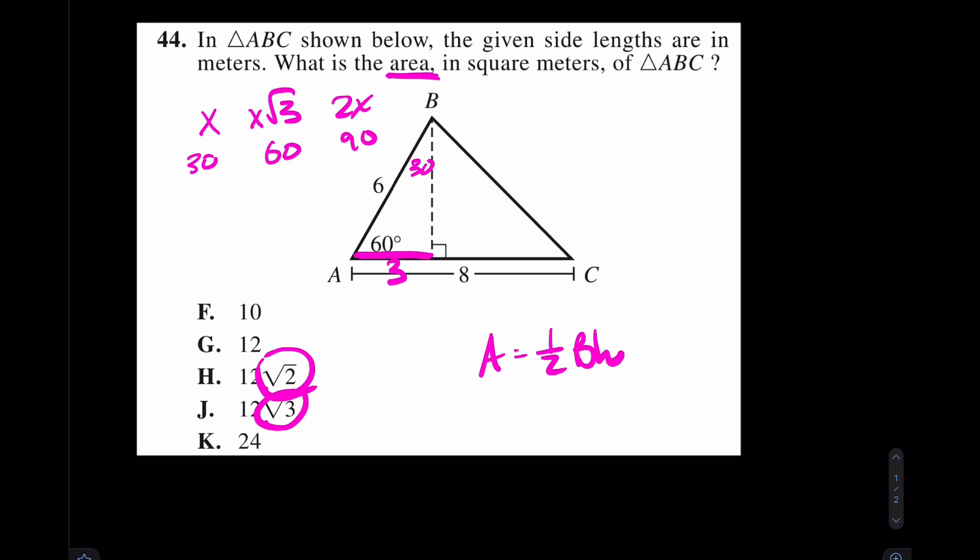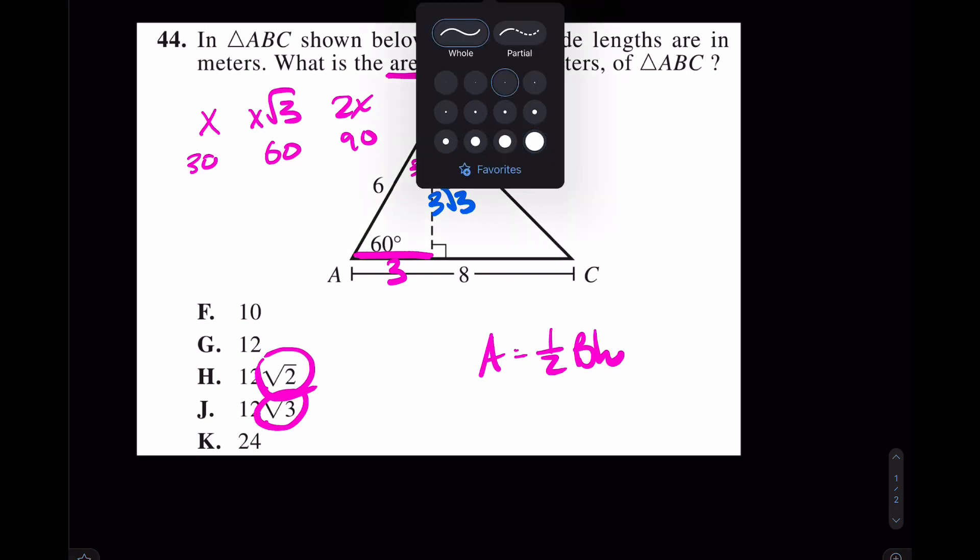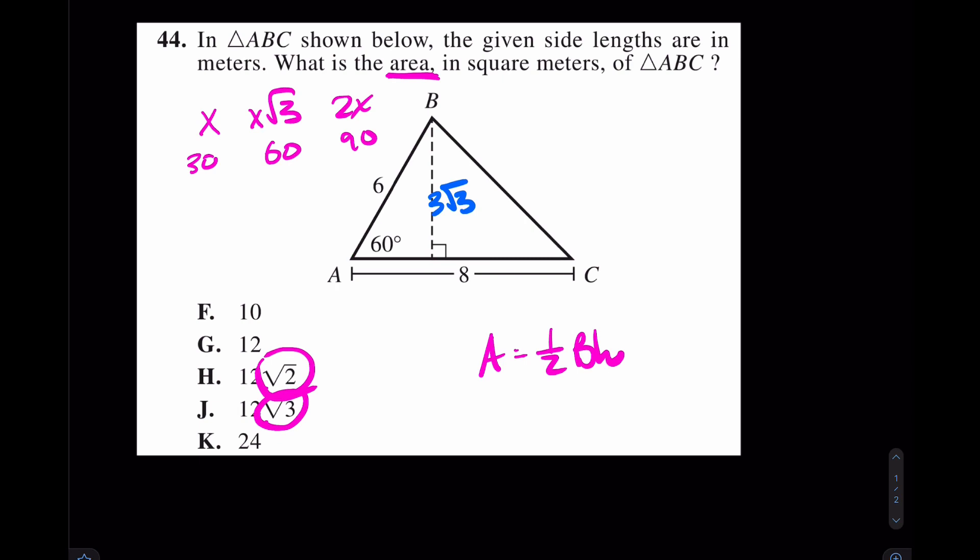Oh, well, that's easy. If that side is 3, then this side must have been 3 root 3. Again, 3, 3 root 3, 6. That's a 30, 60, 90. So I'll clean this up a little bit for you because at this point, we're done. We have the base and we have the height. Now, what are we going to do? Well, it's just 1 half times the base, which is 8, times 3 root 3, and we're done. The answer is going to be J, 12 root 3. If you have any questions, of course, chime off in the comments down below. But I'm going to keep moving.